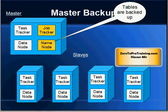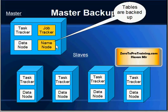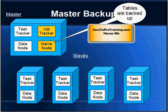One could argue that fault tolerance only covers slave computers — if the master dies, that would be a single point of failure. Hadoop has addressed this as well. The tables maintained by the Name Node — the index of where data resides on which computer — are backed up and copied to different computers. The enterprise version of Hadoop also keeps two masters: one main master and one backup, so the master is not a single point of failure.